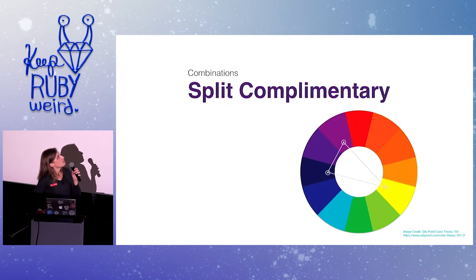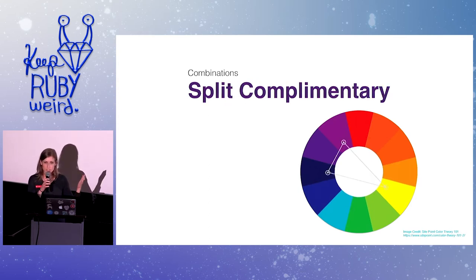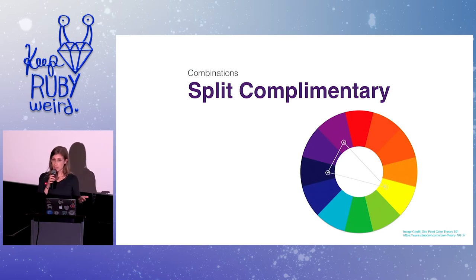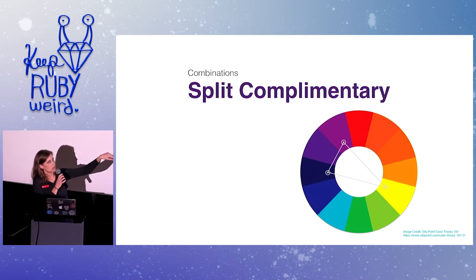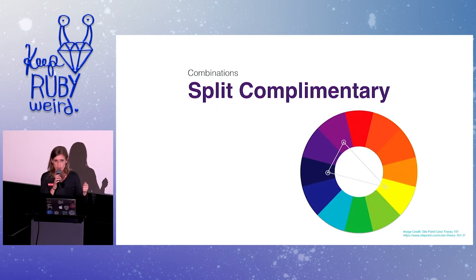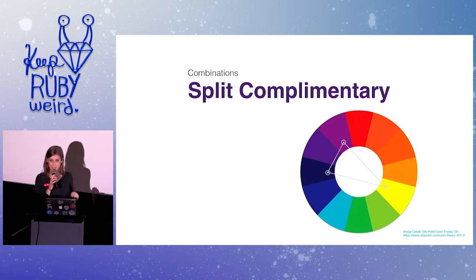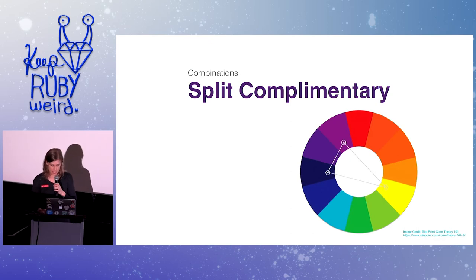Then we have the split complementary color combination, which is essentially taking the ease of creating a complementary color combo and then going up a tick or down a tick on the color wheel for the opposing color to soften it a little bit. You'll see many sports teams leveraging this. It's great — easy, very bright, very fun, and an easy combination that looks nice.